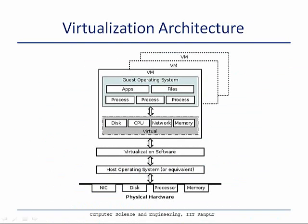Let us look at the architecture of a system which has virtual machines created and running on it. At the very bottom you see the hardware layer, comprising your regular network interface card, hard disk, processor and memory. On top of it you may have a host operating system installed, with device drivers and other facilities to access the underlying hardware. On top of that, you may have a virtualization layer — a specialized layer which helps project the actual physical hardware as virtual resources.